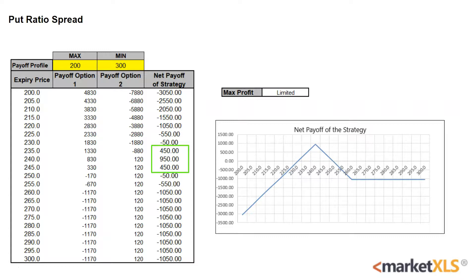Maximum loss is unlimited and occurs when the underlying stock price experiences a sharp decline and drops below the breakeven point at expiration, as shown by the red box. Any risk to the upside for the put ratio spread is limited to the debit taken to put on the spread, as shown by the blue box. There may even be a profit if a credit is received when putting on the spread.